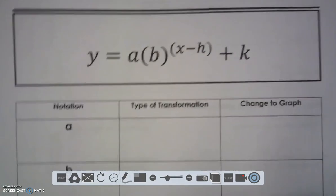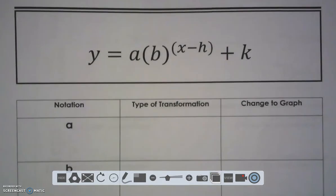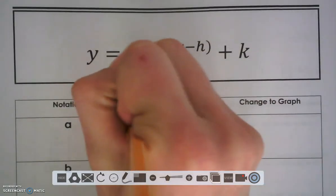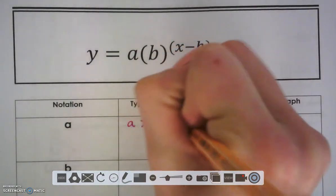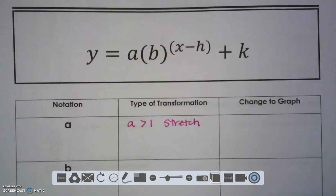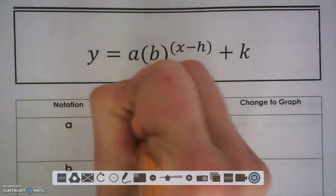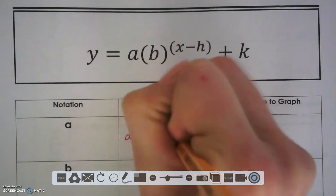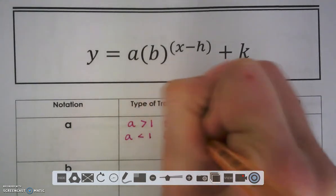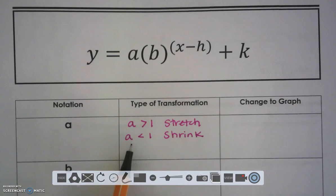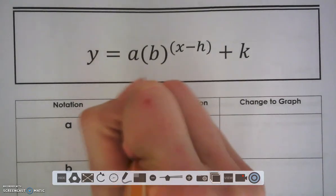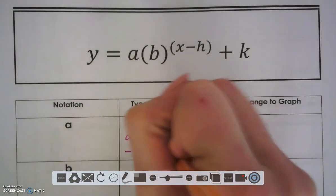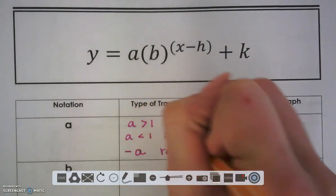Remember that your a value means a couple of different things. If our a value is greater than 1, we have a stretch. If our a value is smaller than 1, we have a shrink. And remember when I'm talking about smaller than 1, I'm talking about fractions. And if I have a negative a, that negative is the only thing that can talk about a reflection.